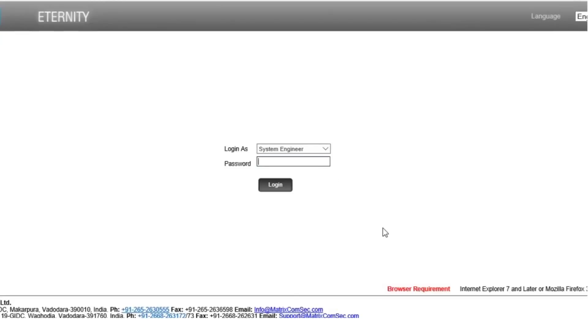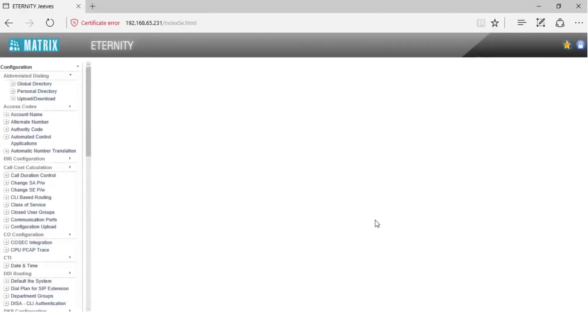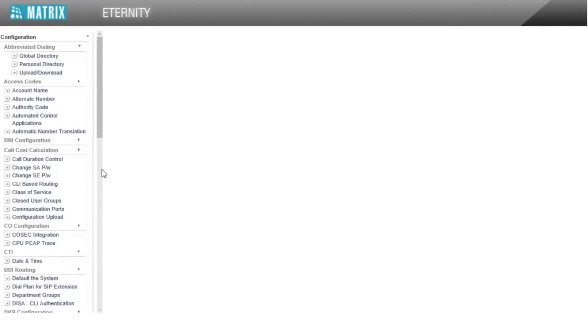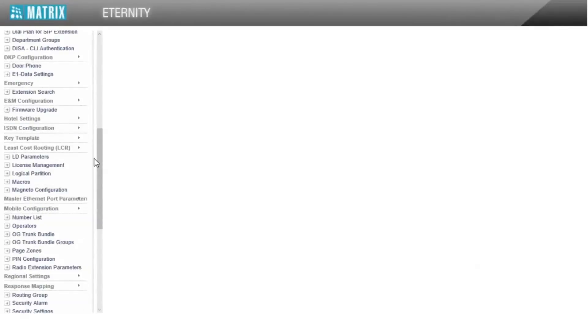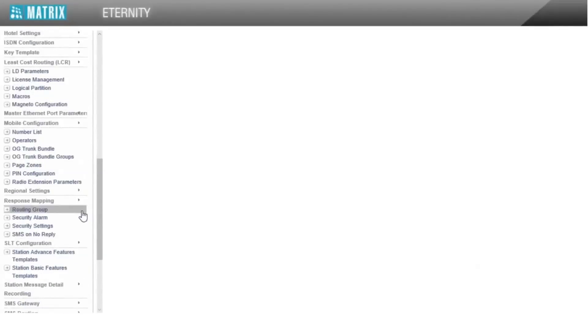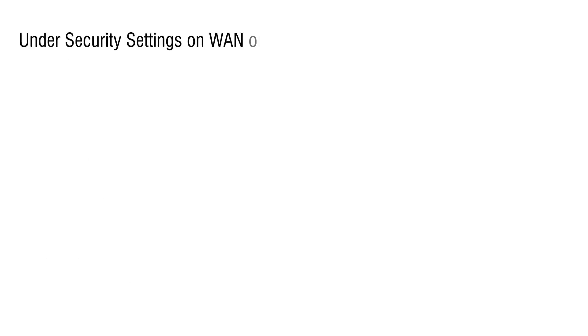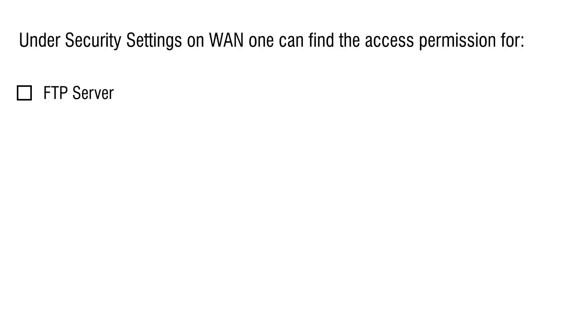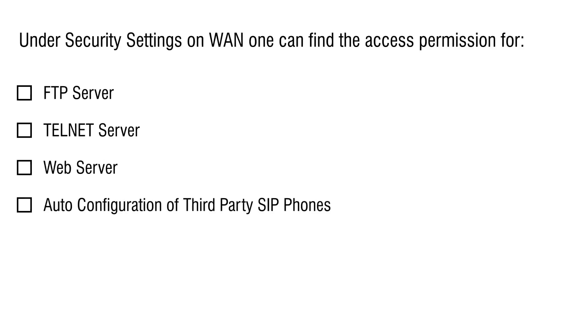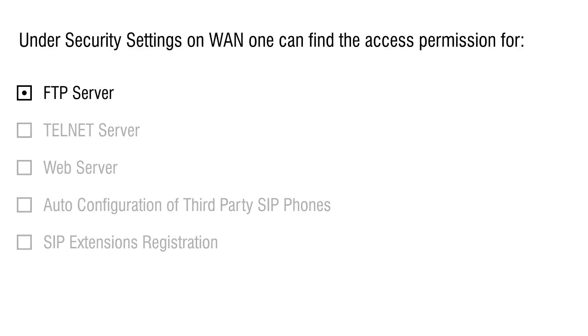Login into the GUI as system engineer. Go to security settings. Under security settings on WAN, one can find the access permissions for FTP server, Telnet server, web server, auto-configuration of third-party SIP phones, and SIP extension registration. Let us see them one by one.